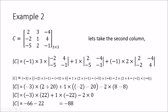Once you expand and simplify, you get minus 3 into 22, which is minus 66, and minus 22 from the second term, and 0 from the third. So you get minus 66 minus 22, which is also minus 88. You can see that whatever row or column you use, you will get the same answer for the determinant of a matrix.